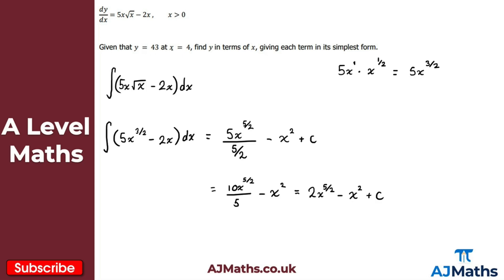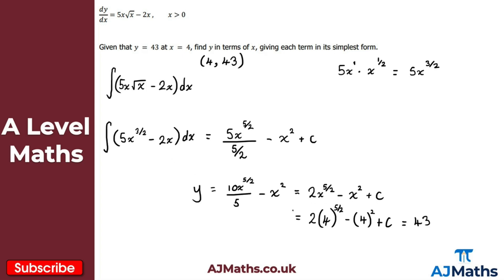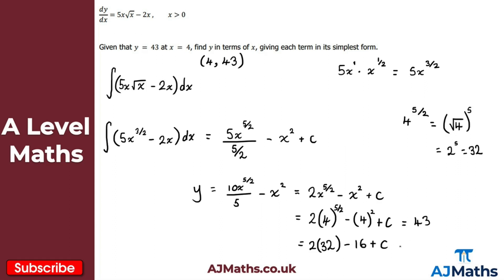Now we use the given point: x equals 4, y equals 43. Substituting in: 2 lots of 4 to the 5 over 2 minus 4 squared plus c equals 43. To evaluate 4 to the 5 over 2: take the square root of 4, which is 2, then raise to the power 5, giving 32. So we get 2 lots of 32, which is 64.